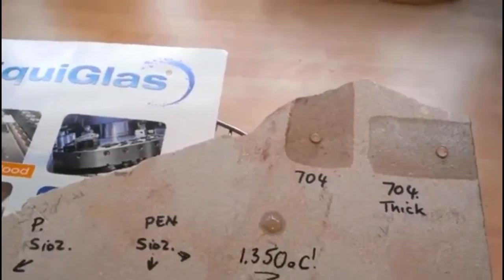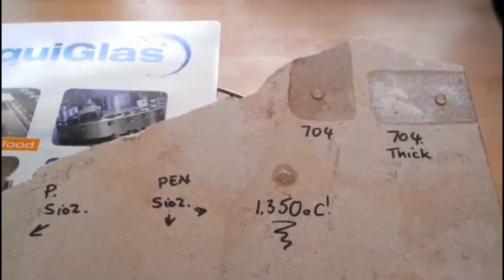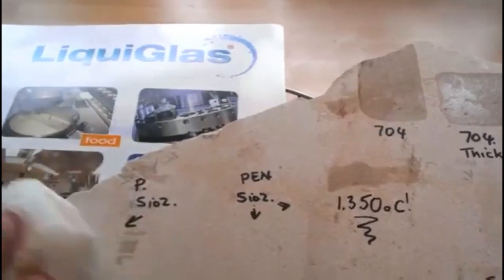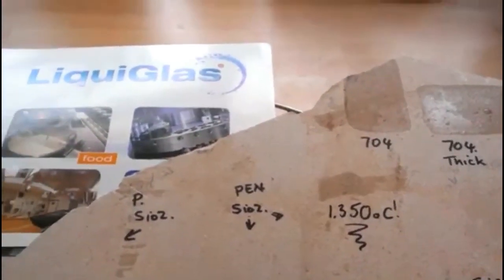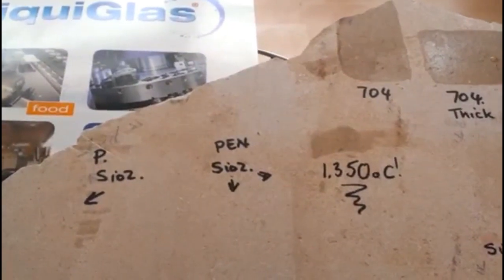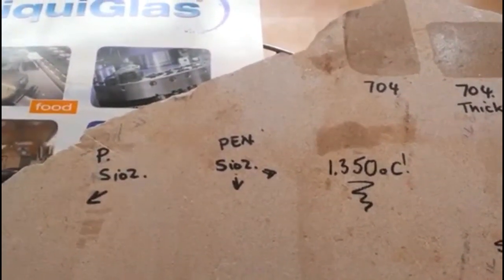Here is an uncoated sample, and so we're going to do a very simple experiment now to demonstrate. You can hear to the side here a blowtorch. It's going to be a bit noisy in a second. It'll be 1350 degrees.